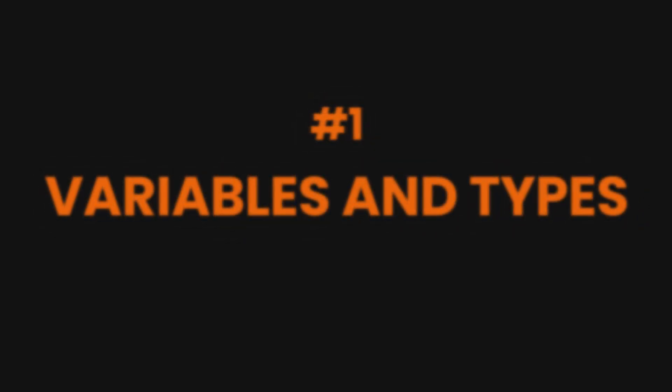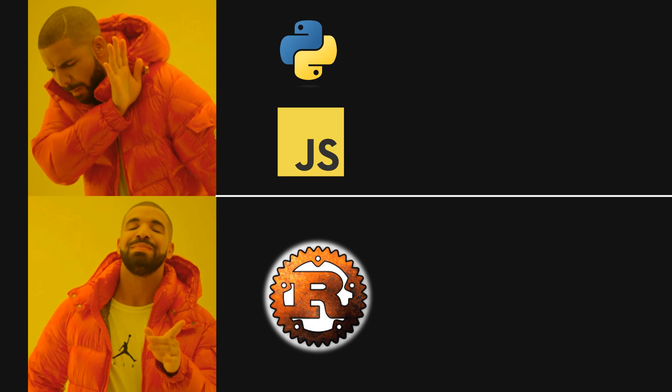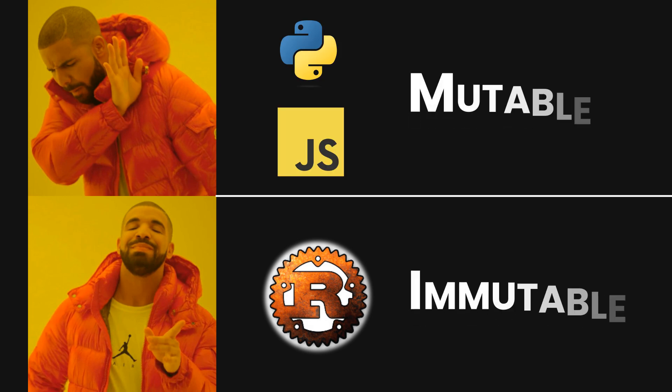Alright, let's start with the basics: variables and types. Now Rust is pretty unique here. Unlike languages like Python or JavaScript, variables in Rust are immutable by default. Yep, you heard it right - they can't change unless you specifically say they can. This might seem weird at first, but there is a reason for it.